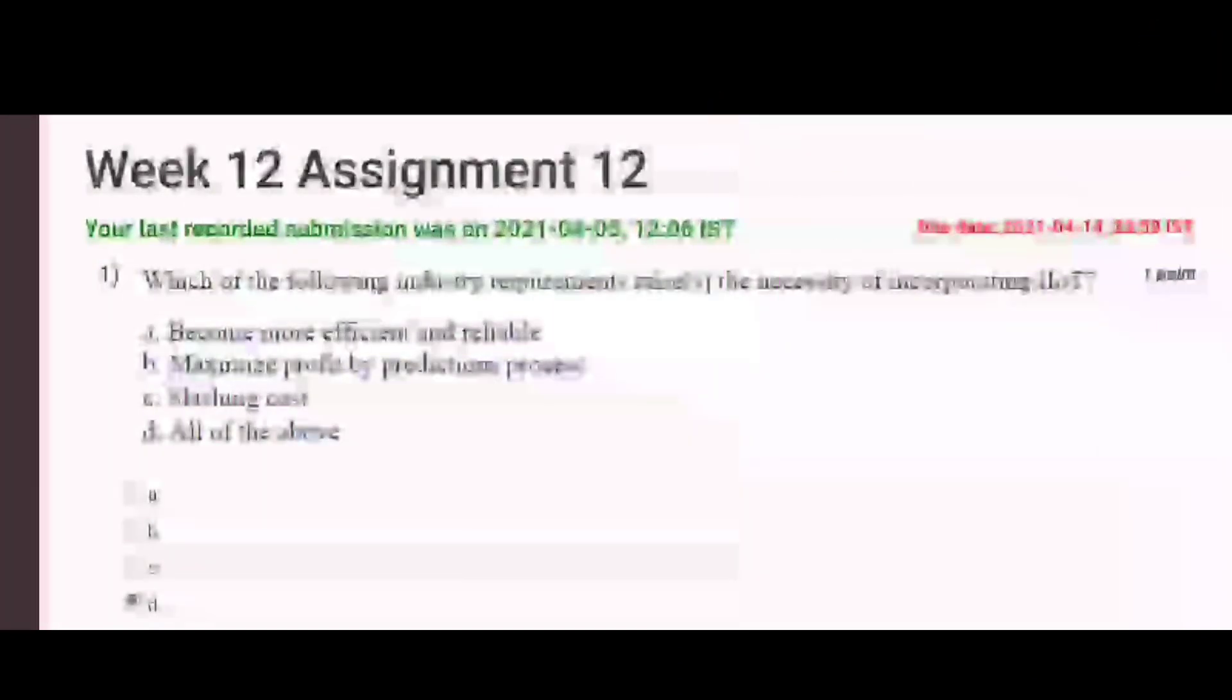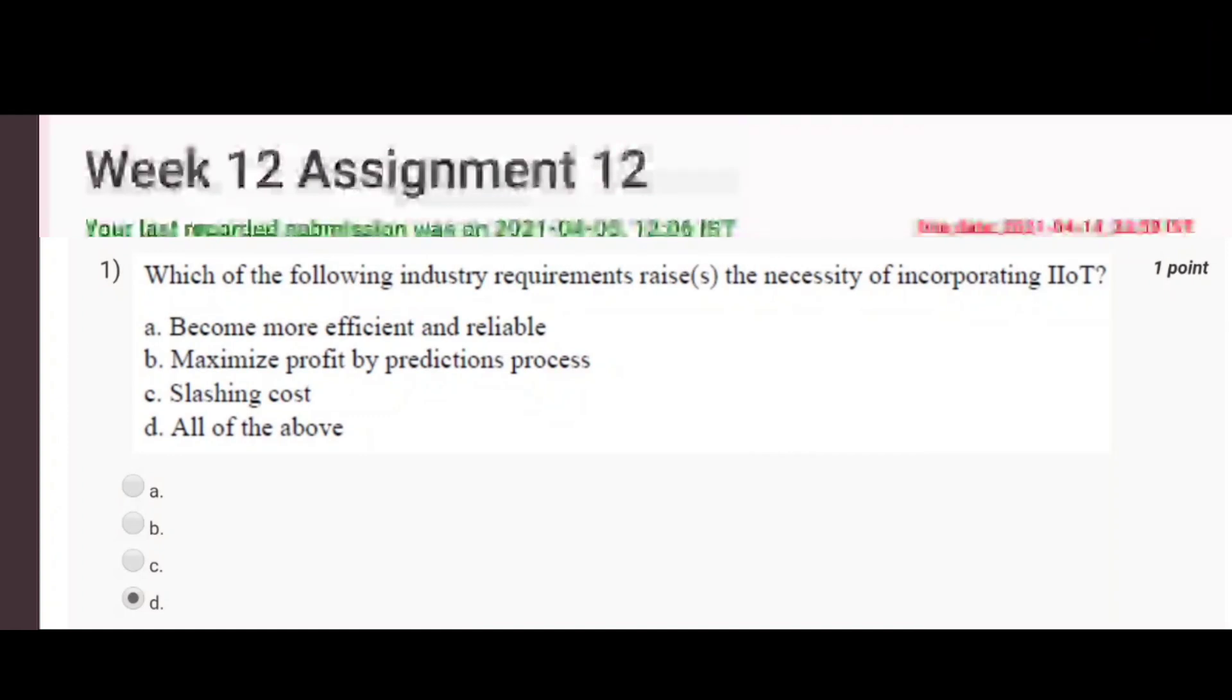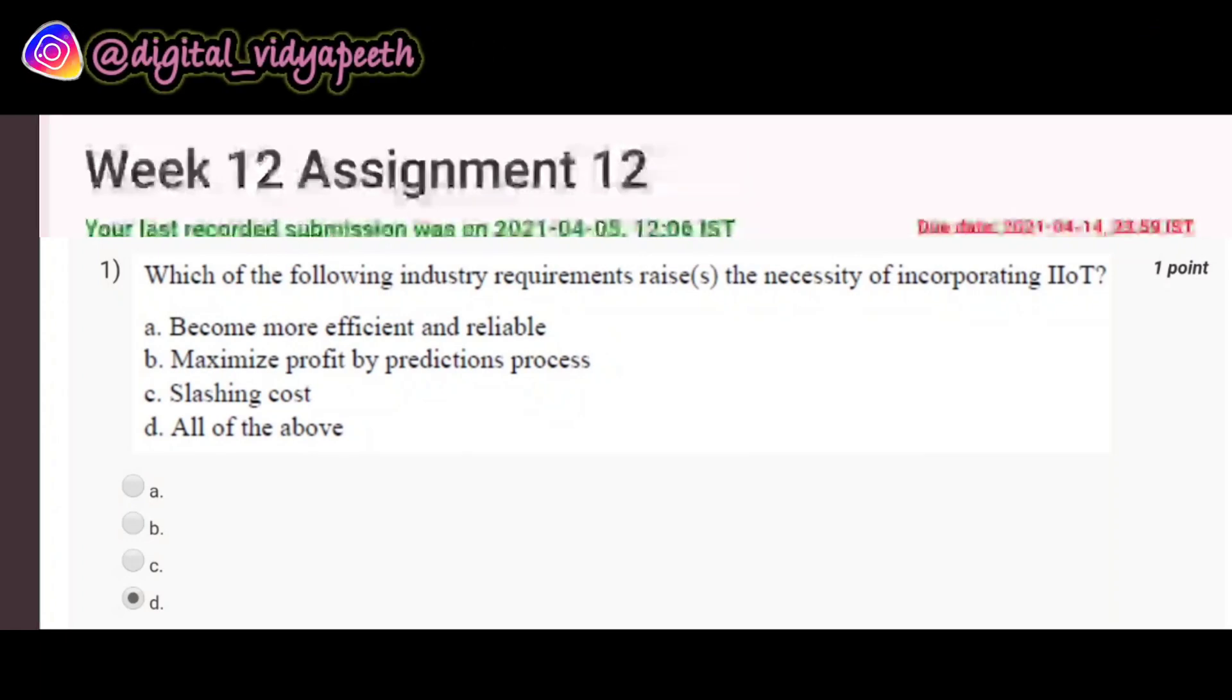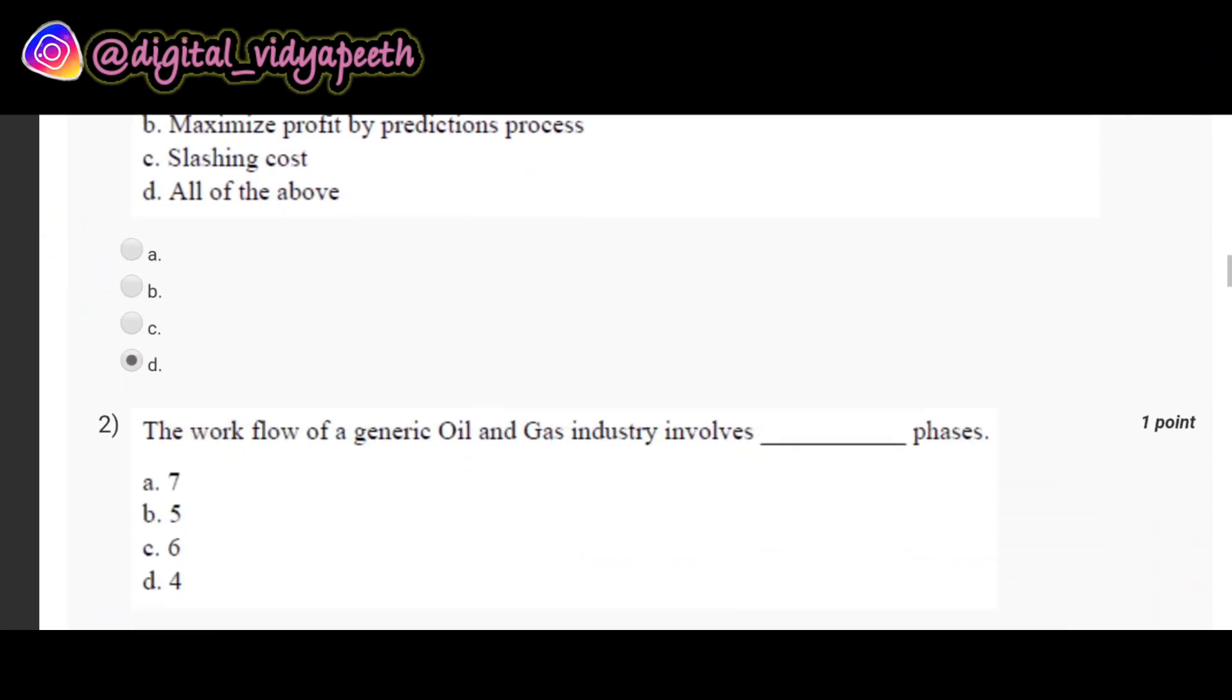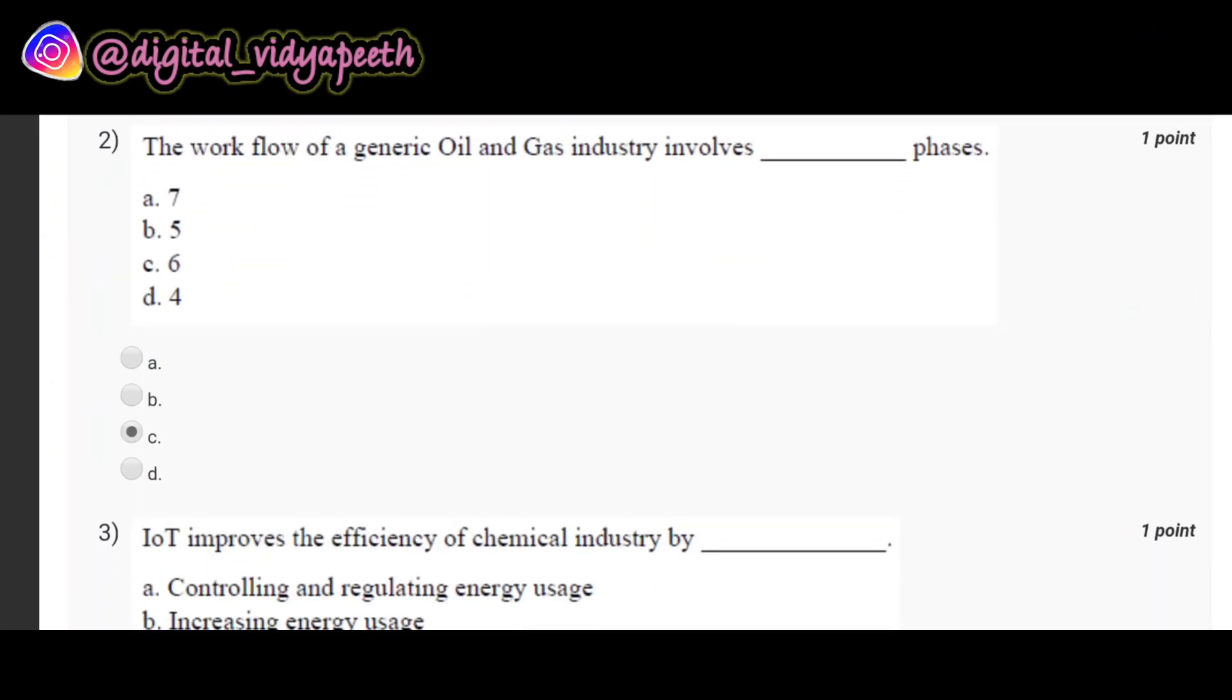Our first question is which of the following industry requirements raise or raises the necessity of incorporating IIoT? Correct option is D, all of the above, that is become more efficient and reliable, maximize profit by predictions process, slashing cost. Our second question is the workflow of a generic oil and gas industry involves dash phases. Correct option is C, six.